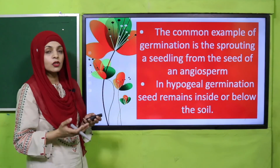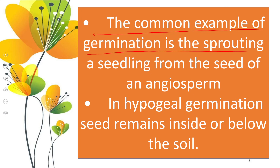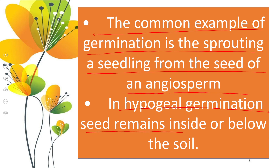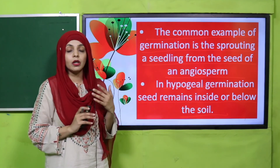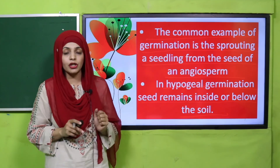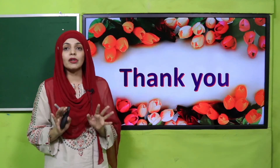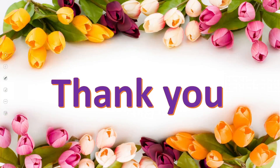Today students have learned that the common example of germination is the sprouting of a seedling from the seed of an angiosperm, and that in hypogeal germination the seed remains inside or below the soil. We also studied the germination of chickpea and maize seeds and learned that both undergo hypogeal germination. I hope you enjoyed today's lecture — keep everybody around you safe, have a good day, thank you so much, Allah Hafiz.